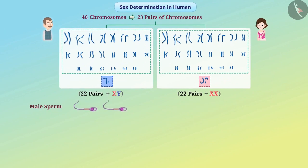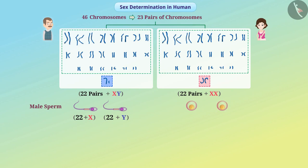When sperm is produced in a male, the 23 pairs of chromosomes are divided such that one chromosome of each pair is acquired by each sperm cell. In this way, half the sperms have the X chromosome and half the sperms have the Y chromosome. Since the sex chromosomes in females are XX, all the reproductive cells — that is, eggs — have the X chromosome.